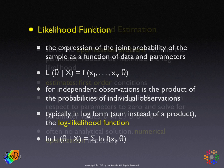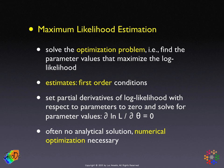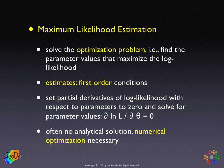It's a straightforward application of calculus. To find the maximum of a function of a small number of parameters, we solve the first-order conditions — the partial derivatives of the log likelihood with respect to the parameters — setting them equal to zero.